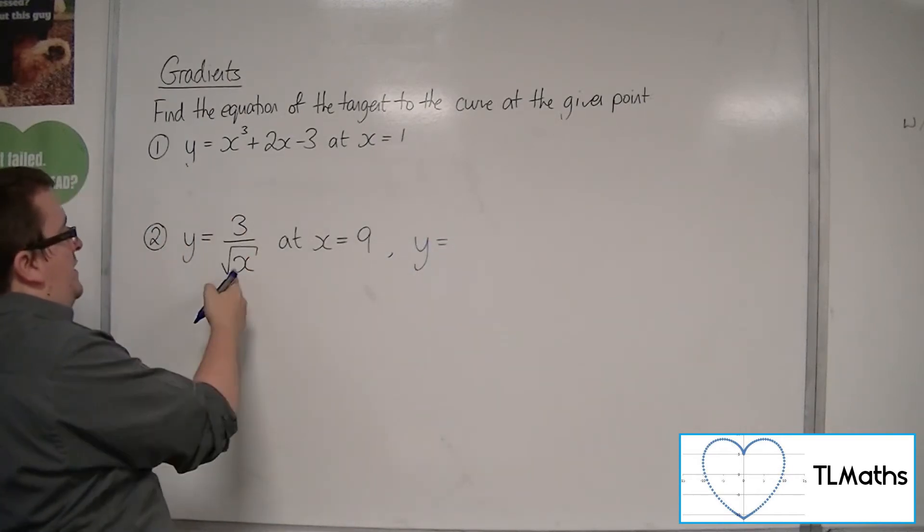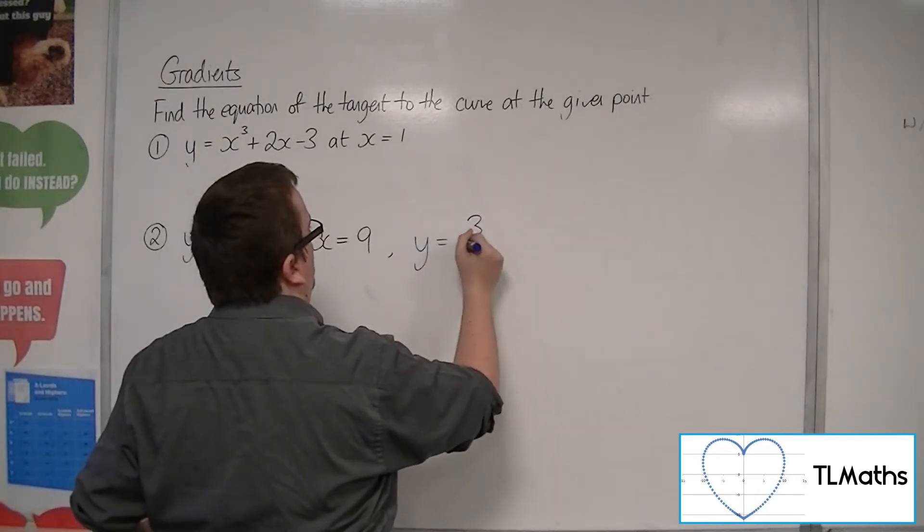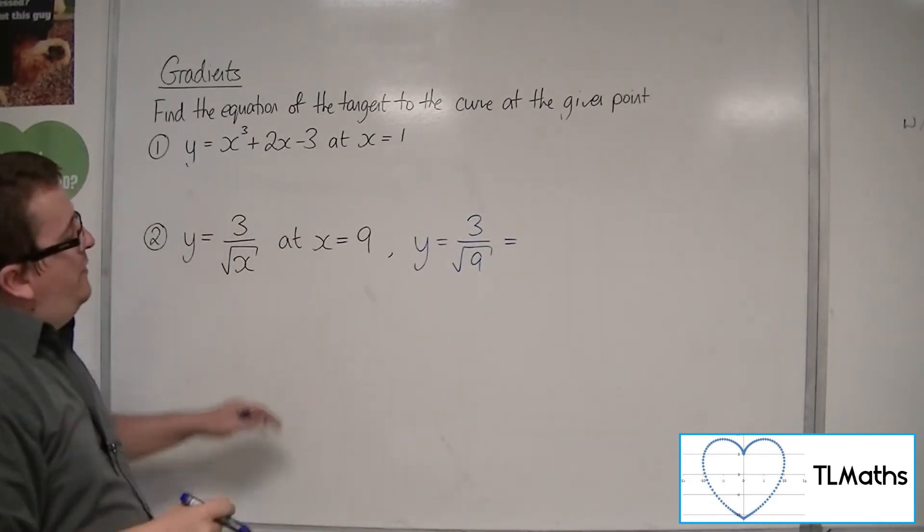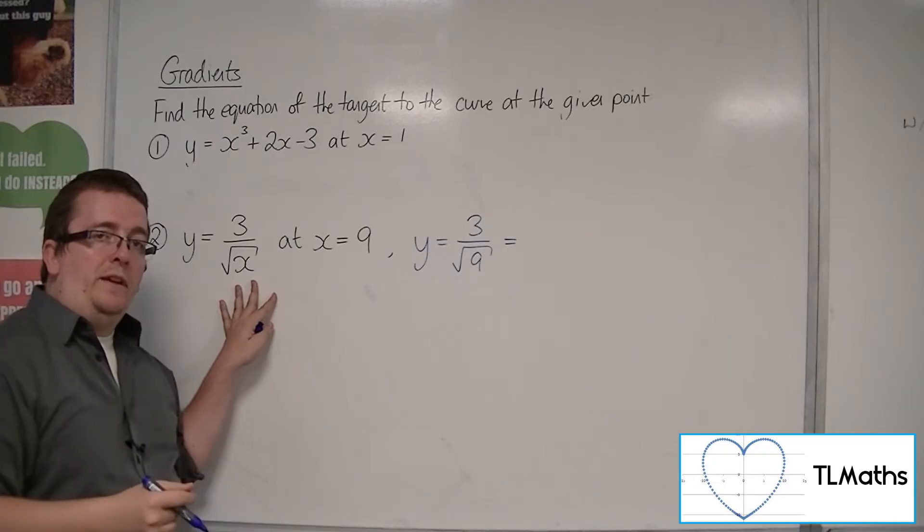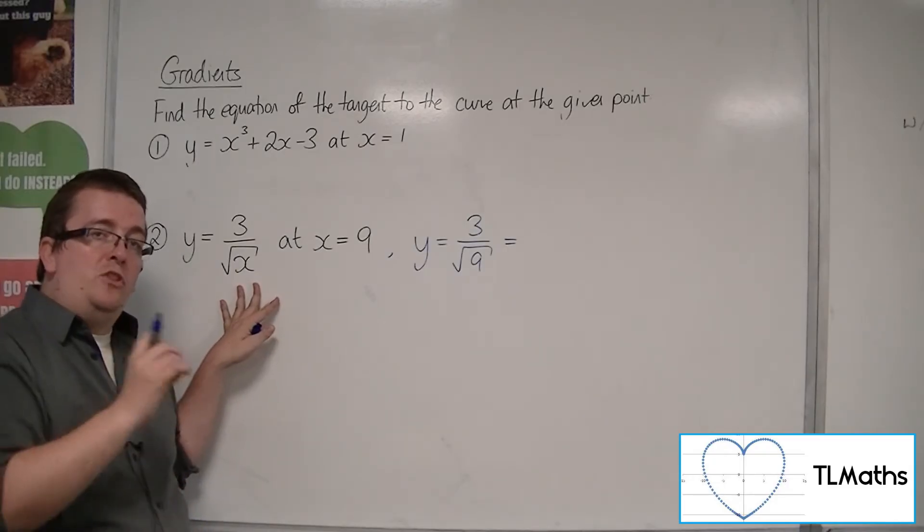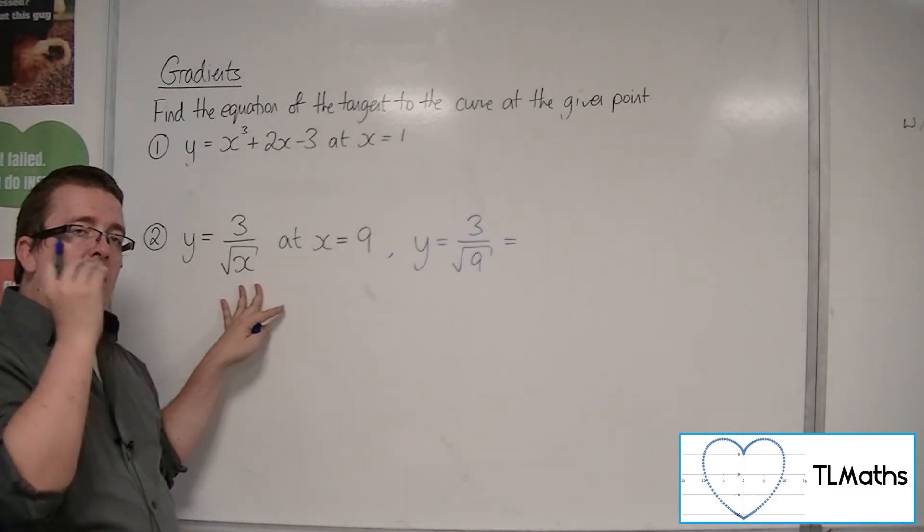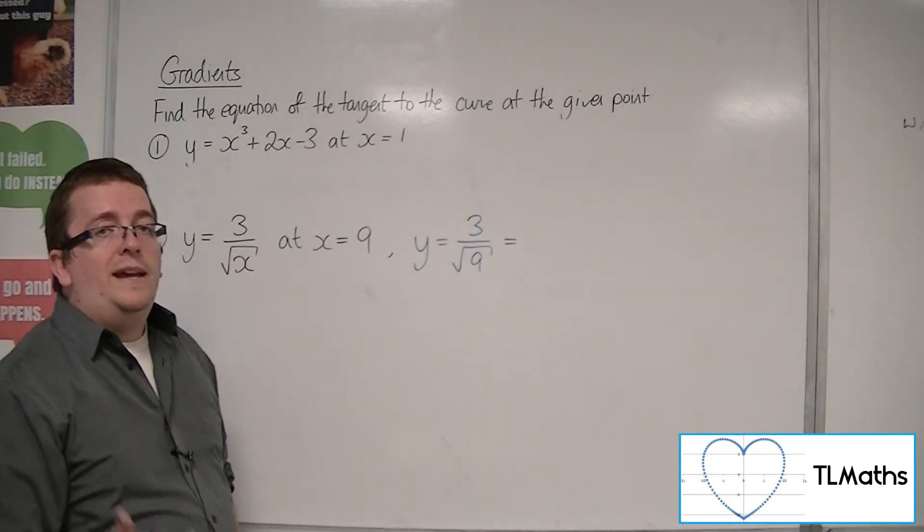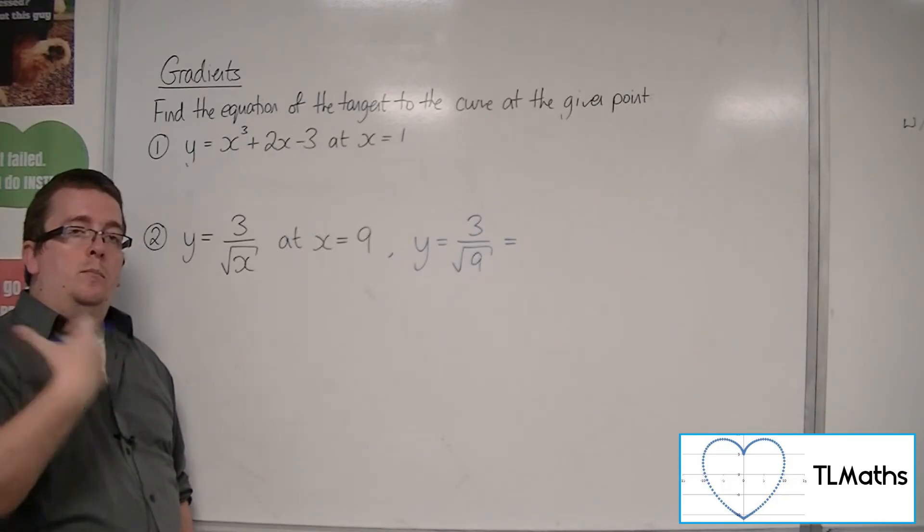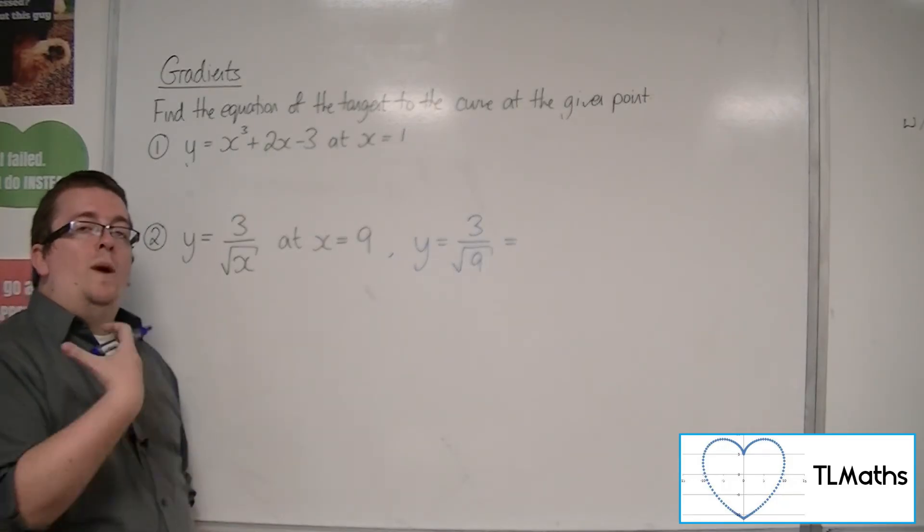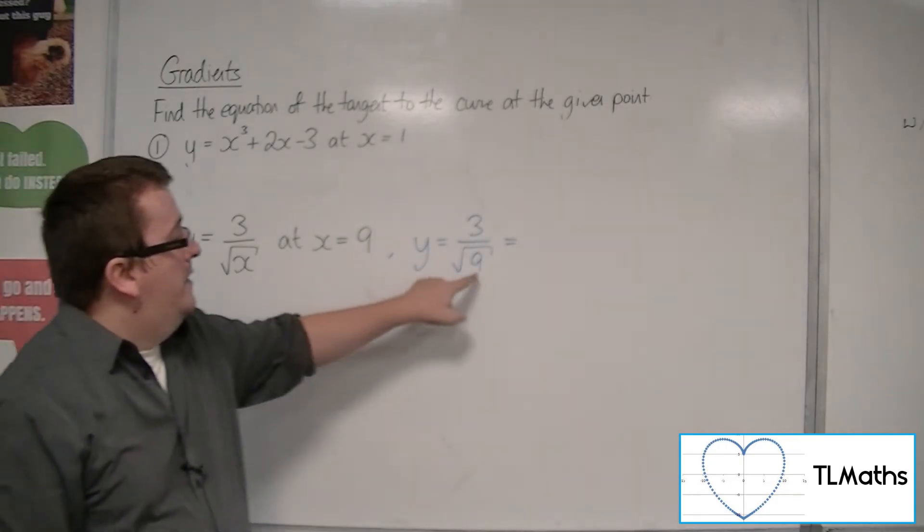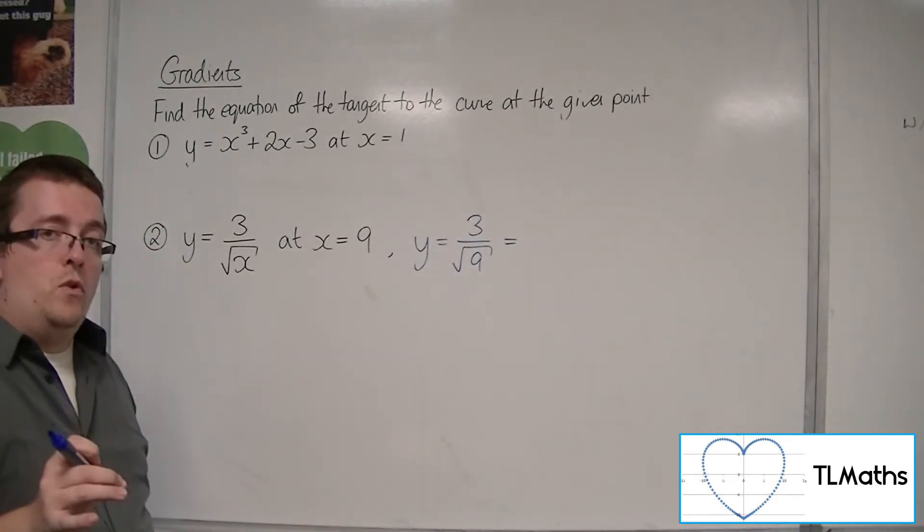So we need to substitute 9 into this. So we get 3 over the square root of 9. Now, whenever you have the square root of something like that written down and you're substituting a value in, you only ever take the positive square root. If I asked you what is the square root of 9, it is correct to say plus or minus 3. But when you see it written down like this, that is just 3. OK. Important note there.